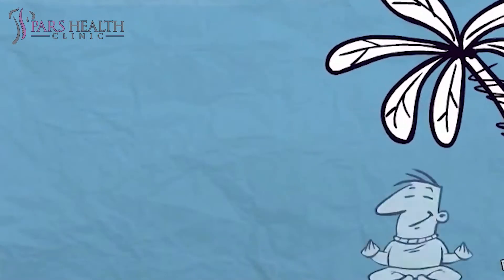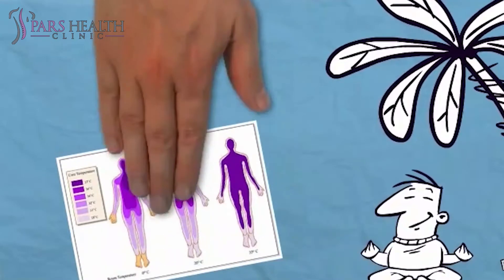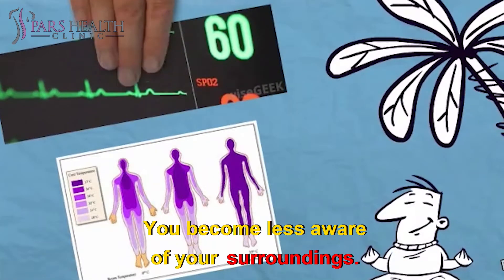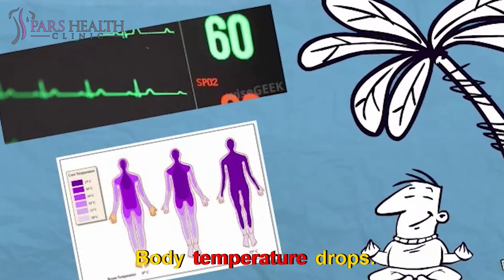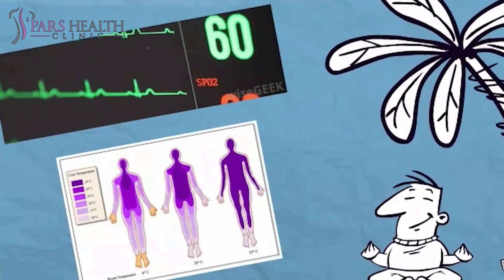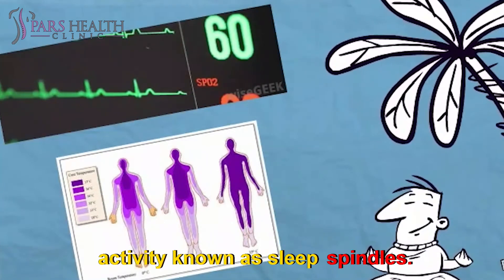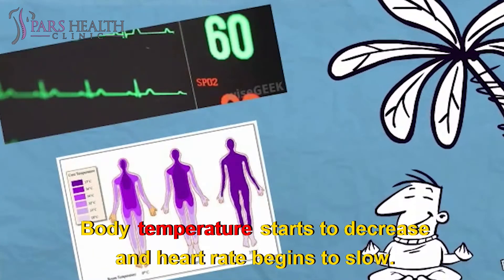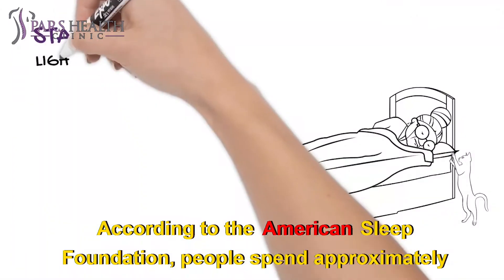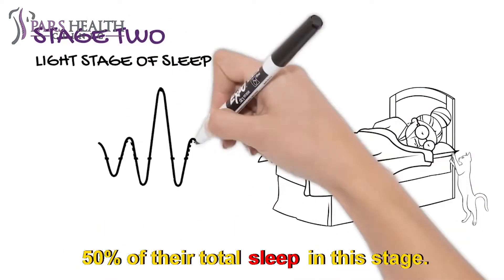Non-REM Stage 2: Stage two is the second stage of sleep and lasts for approximately 20 minutes. During stage two sleep, you become less aware of your surroundings, body temperature drops, and breathing and heart rate become more regular. The brain begins to produce bursts of rapid rhythmic brain wave activity known as sleep spindles. Body temperature starts to decrease and heart rate begins to slow. According to the American Sleep Foundation, people spend approximately 50 percent of their total sleep in this stage.